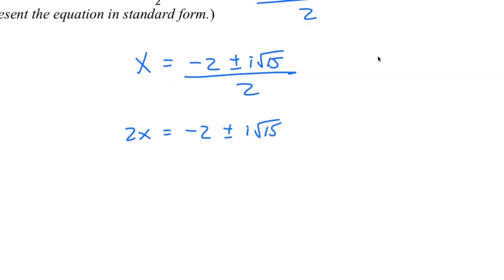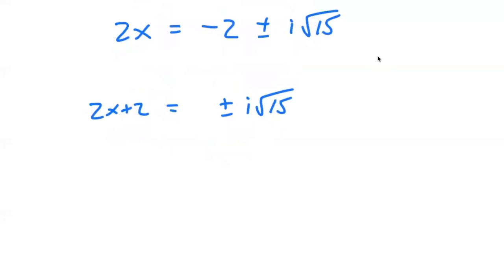The reason why you have a minus 2 is because there was a plus 2 on the left. And there's an i right there. The reason why there's an i is because it was supposed to be a square root of negative 15.